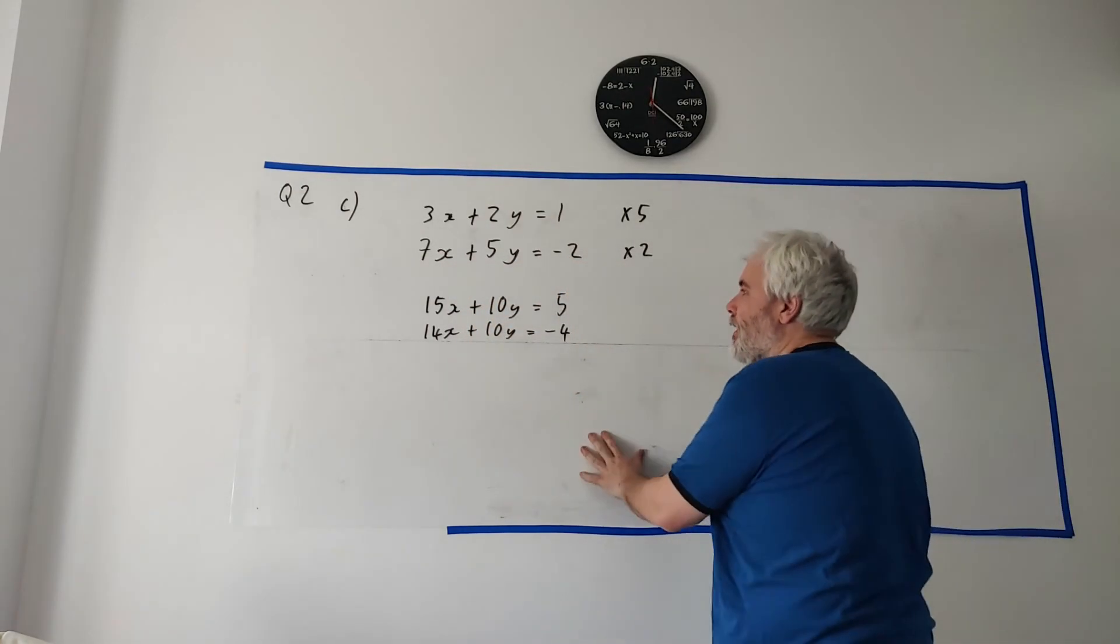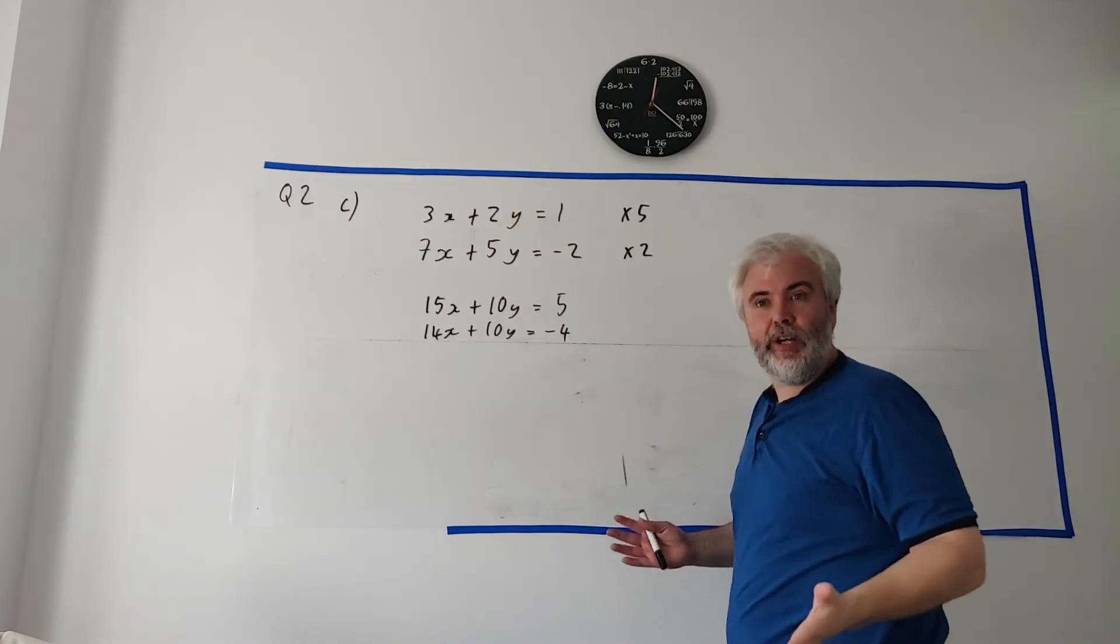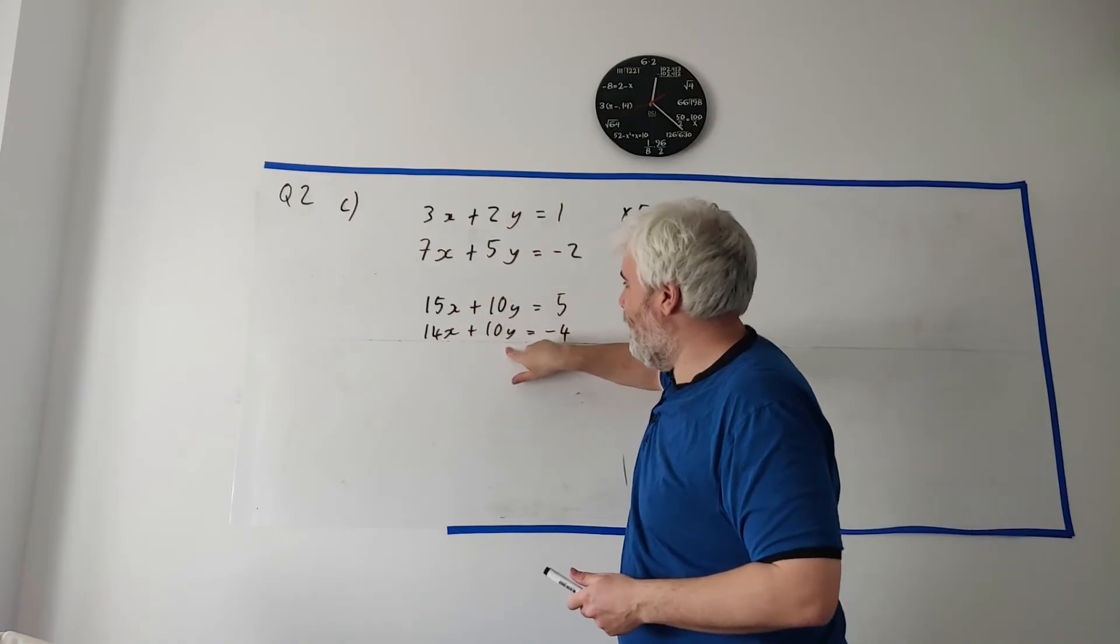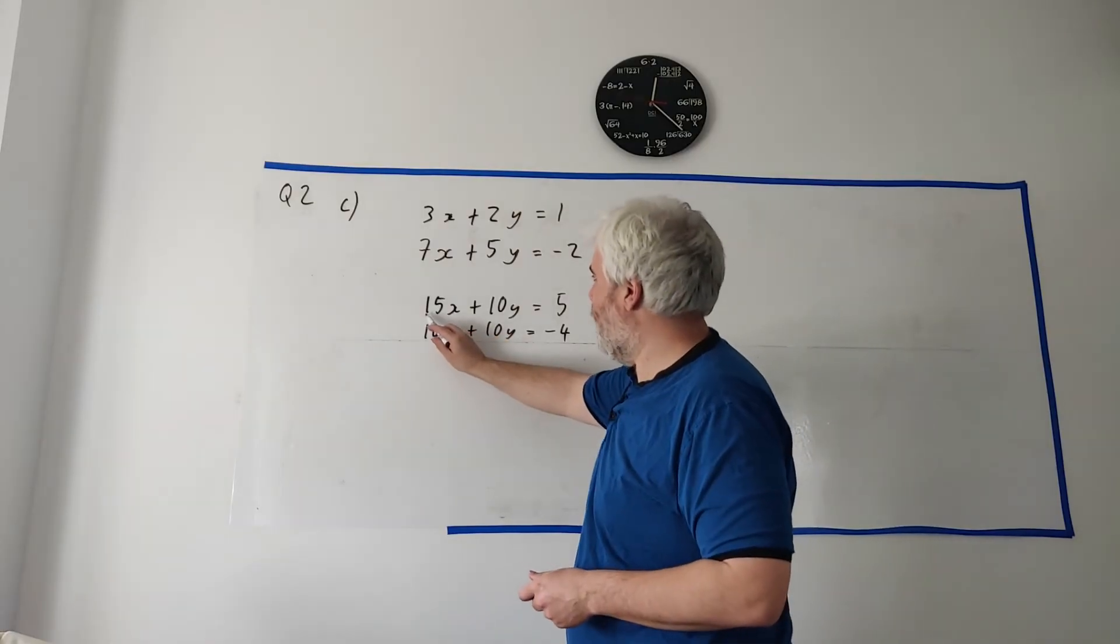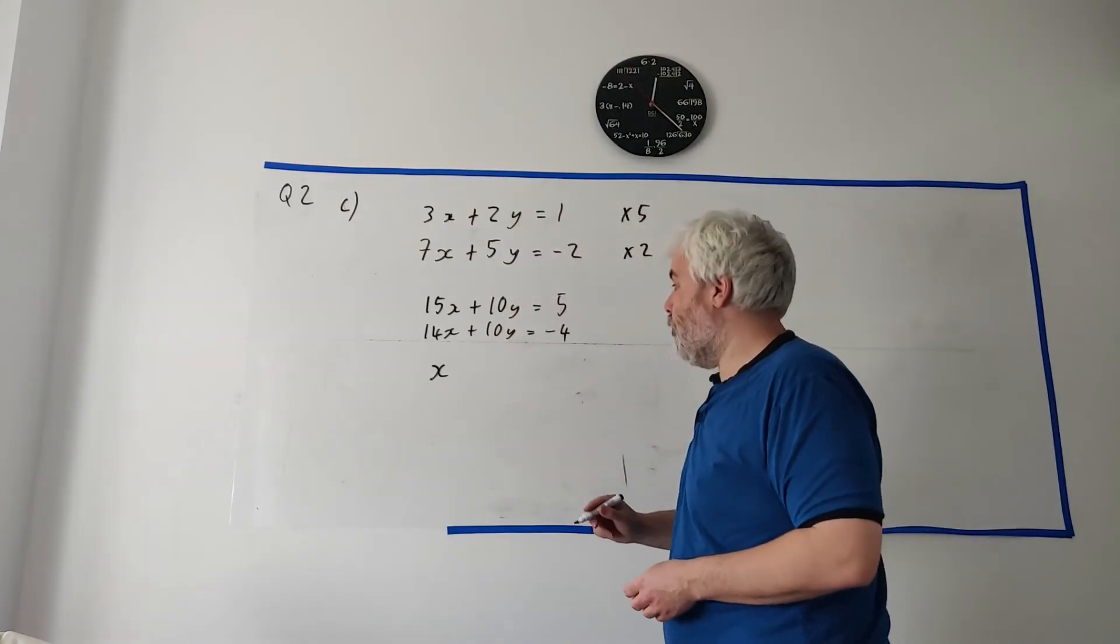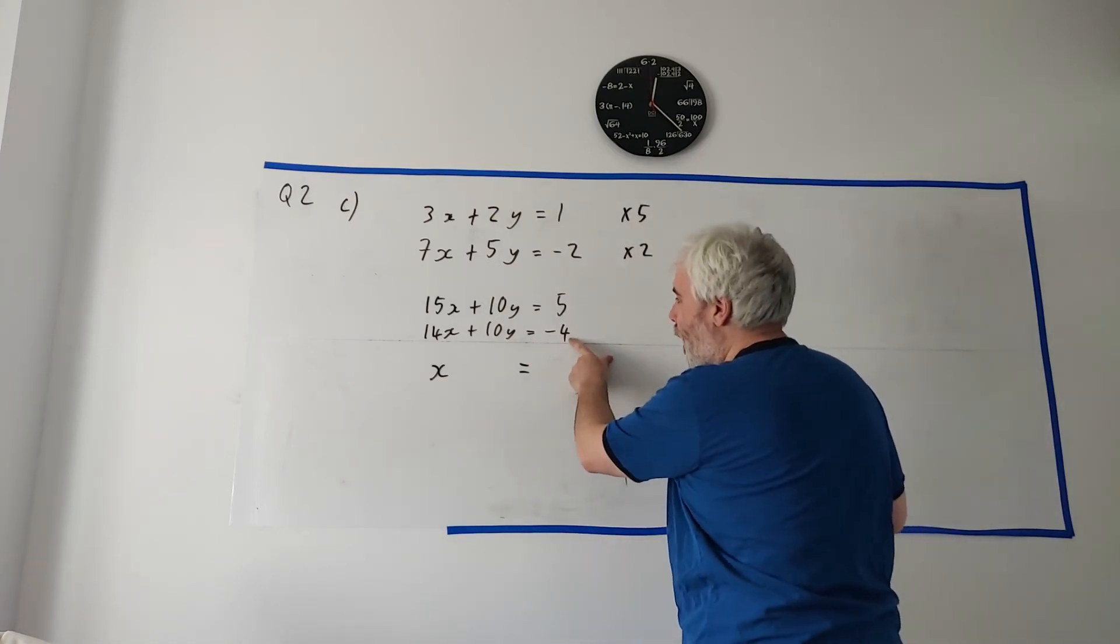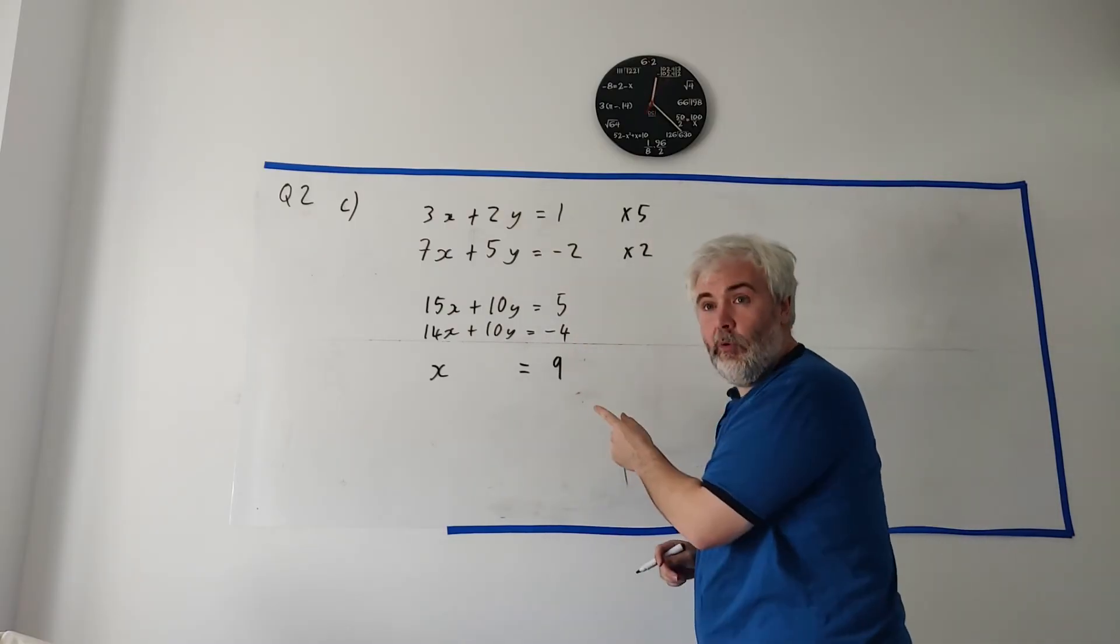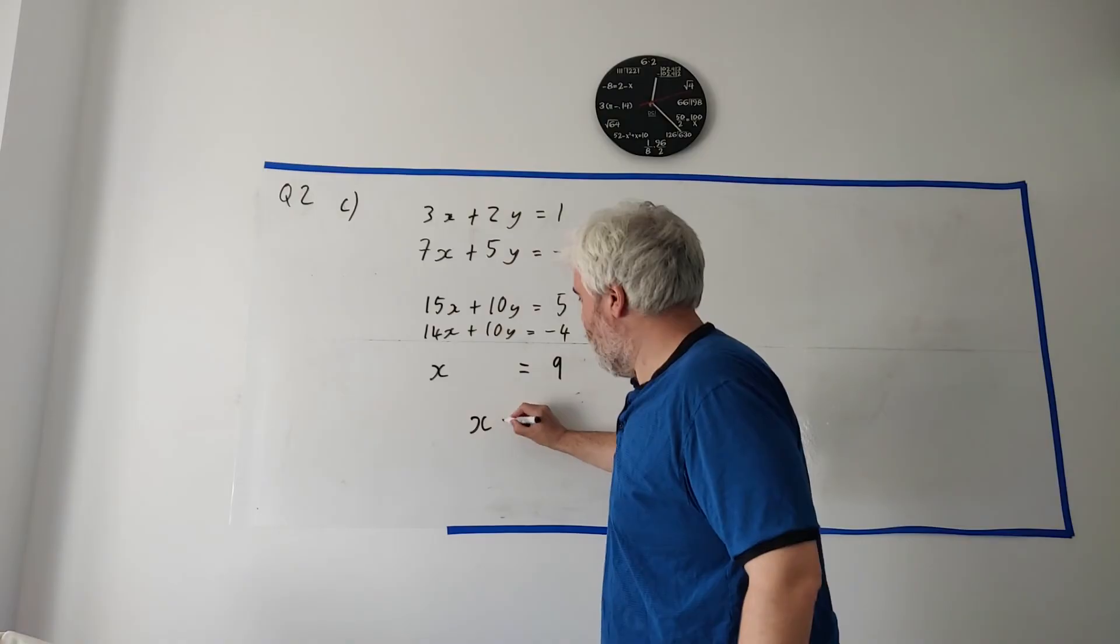Now what we do next is we, because these look alike, we can take 10Y minus 10Y. It'll disappear. There'll be no more Ys. So if we do that, if we take the left side and take away the left side, and the right side, 5, and we'll take away minus 4. So that'll look like 15X minus 14X will just be X. 10Y minus 10Y will be nothing. Equals 5 minus minus 4. Be very careful there. A lot of students will have missed that. It's 5 take away minus 4. So we get plus 4. 5 plus 4 is 9. So there we go. X equals 9.